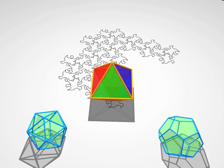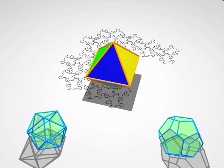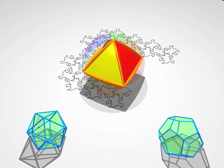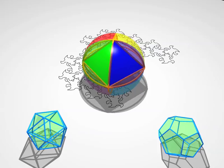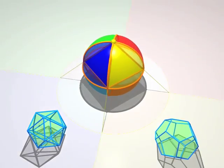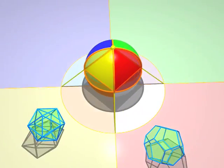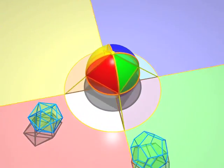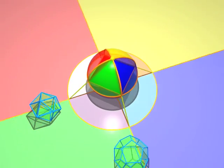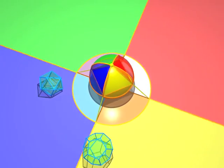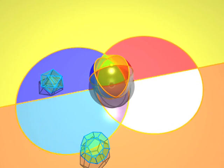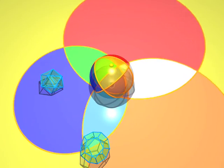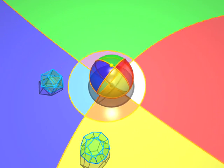And now, here comes an octahedron. You see the eight colored faces. Look how the projections of the edges are arcs of circles.